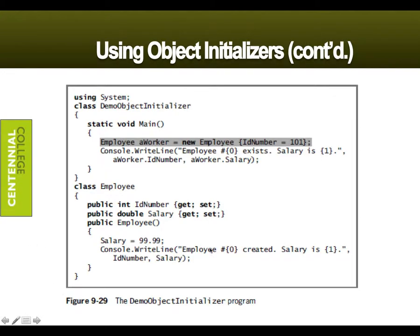So here's a class Employee. I have this static — here's my demo object initializer up here. That's what it's called, this whole class. There are two classes here. This one is almost like our program. And here I'm actually instantiating a new employee object. Here's my 'aWorker', which is based off the Employee class. And I'm sending into it with these curly braces — an ID number, a named variable, of 101. I'm naming the identifier, the class property that's in the Employee class, and I'm setting it automatically to 101.